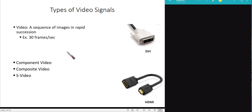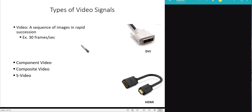Since video is a sequence of images, and a color image is made up of a red plane, green plane, and blue plane, the same concepts apply to video signals as well.